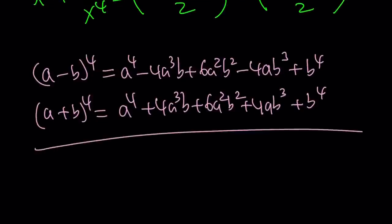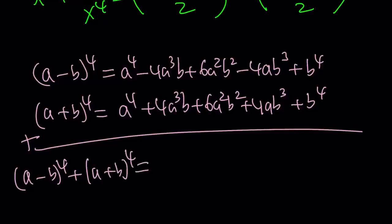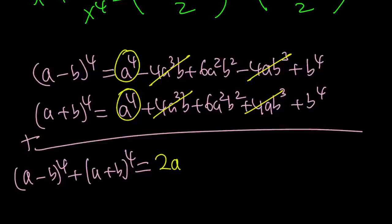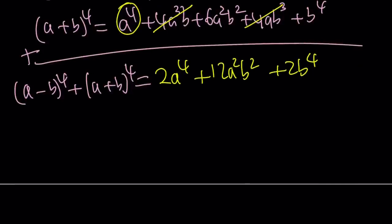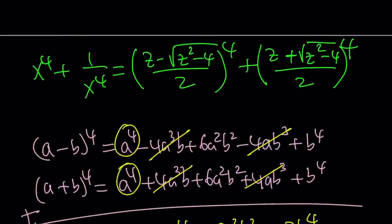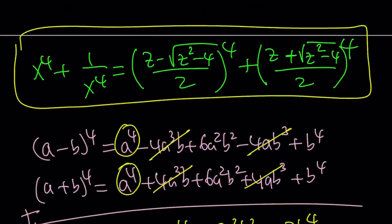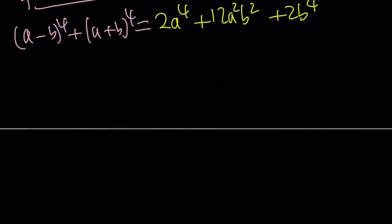When we add these two things, some terms cancel out. Adding a minus b to the fourth and a plus b to the fourth, the negative 4 and positive 4 terms cancel, and we end up with: 2a to the fourth plus 12a squared b squared plus 2b to the fourth — something symmetrical, which is nice. We can apply that here because we have exactly a minus b to the fourth and a plus b to the fourth. Since we have a 2 to the fourth at the bottom, we can first apply this and then take care of the 16 later.